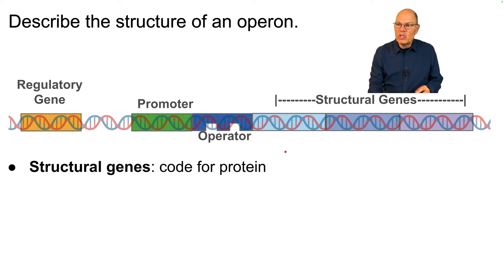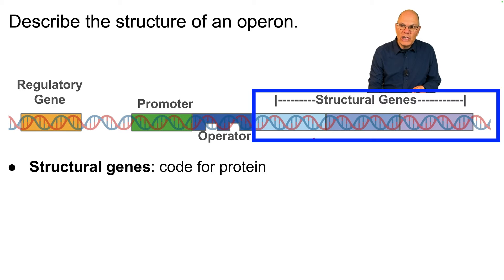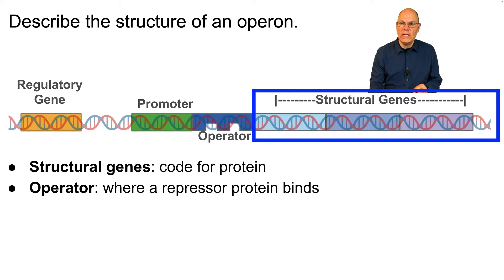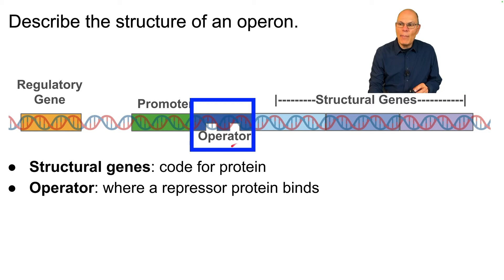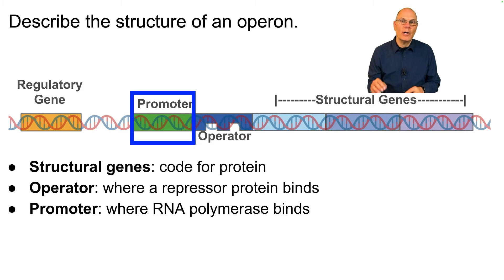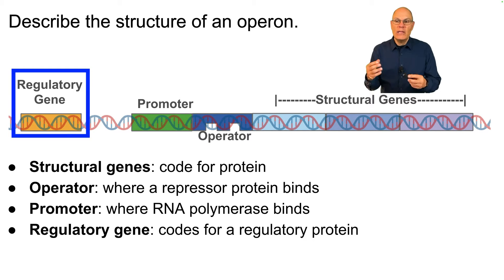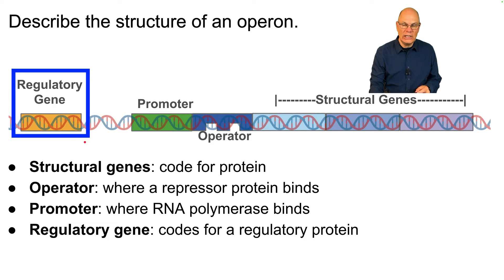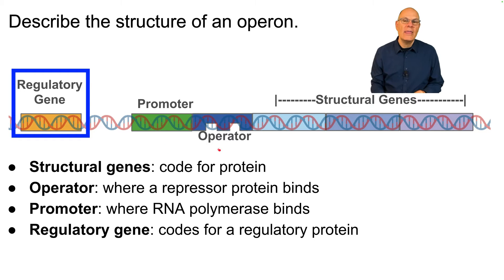Our focus in AP biology is that an operon is a mostly prokaryotic system of gene regulation that has control elements that allow for gene regulation. To describe the structure: an operon consists of structural genes — genes that code for protein — an operator where a repressor protein binds, a promoter where RNA polymerase binds, and a regulatory gene that produces the regulatory protein, generally a repressor that binds at the operator.